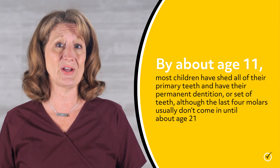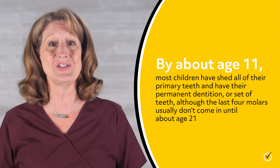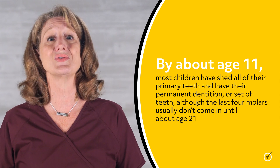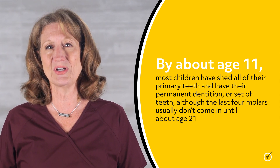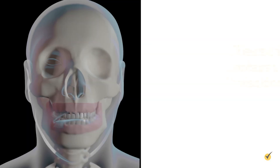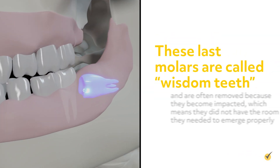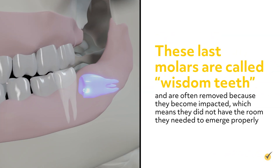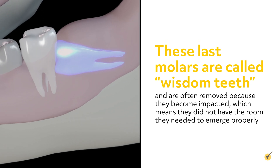By about age 11, most children have shed all of their primary teeth and have their permanent dentition, or set of teeth, although the last four molars usually don't come in until about age 21. These last molars are called wisdom teeth and are often removed because they become impacted, which means they did not have the room they needed to emerge properly.